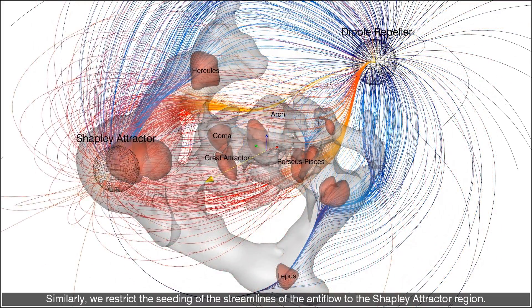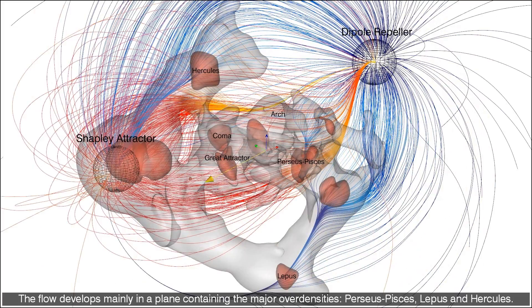Similarly, we restrict the seeding of the streamlines of the anti-flow to the Shapley attractor region. The flow develops mainly in the...